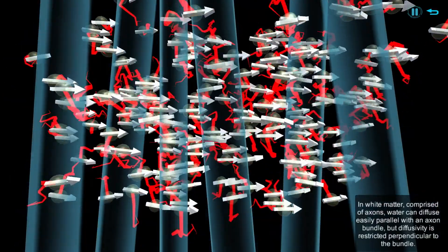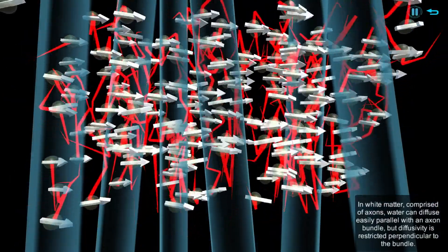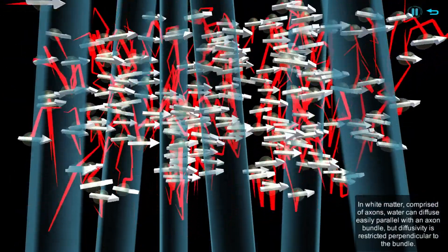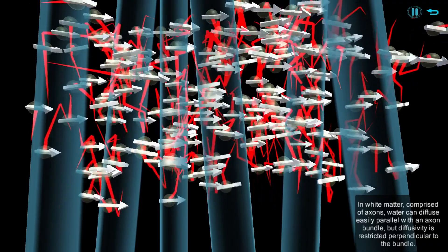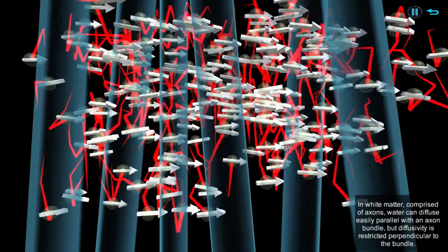In white matter, comprised of axons, water can diffuse easily parallel with an axon bundle, but diffusivity is restricted perpendicular to the bundle.